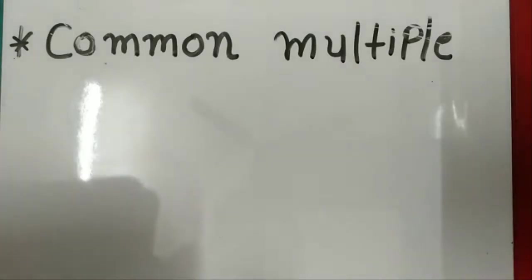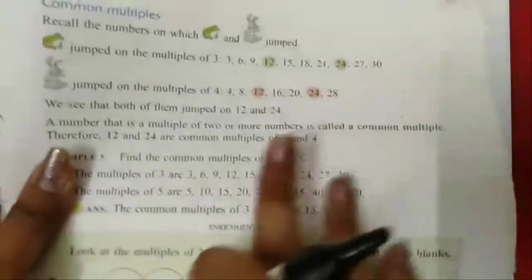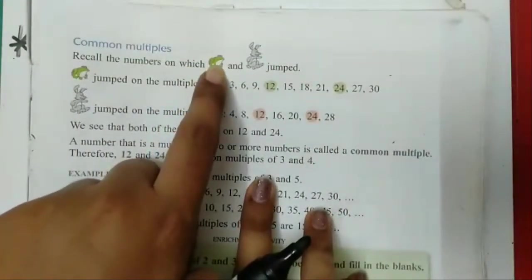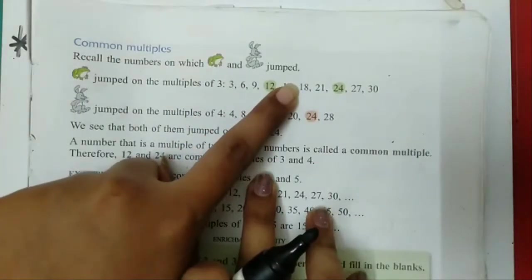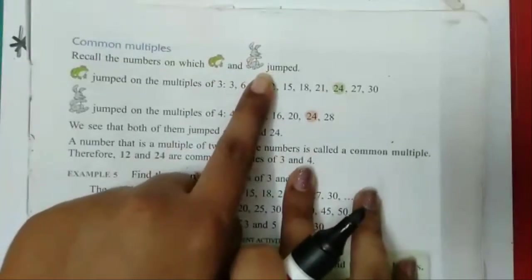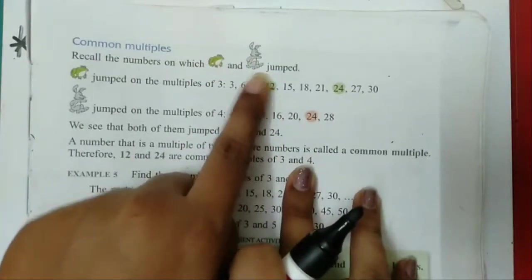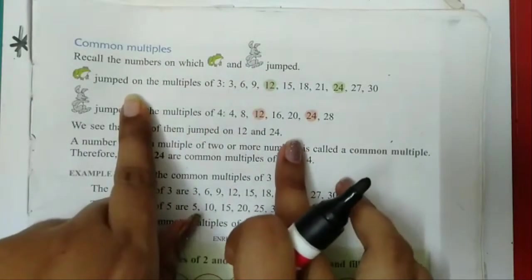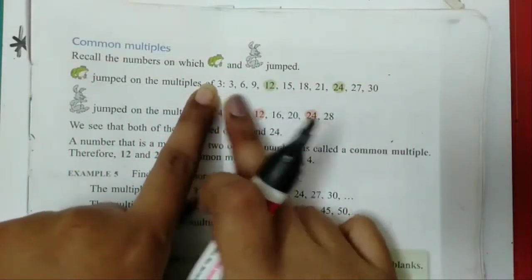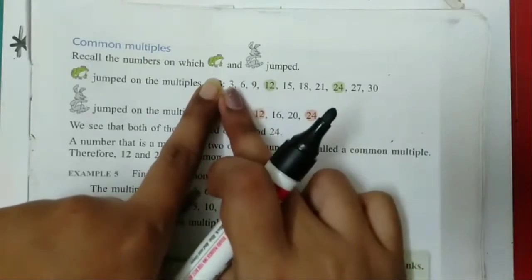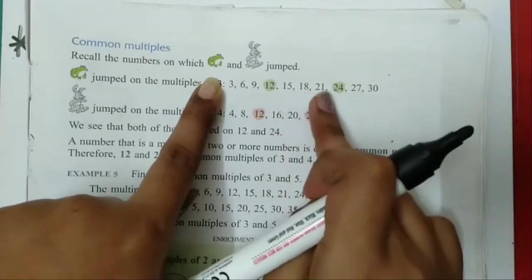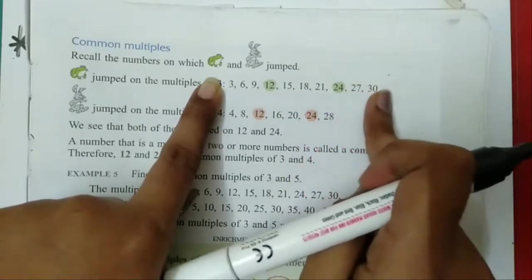How do we know? We saw a story — recall the number on which Mr. Froggy and Mr. Rabby jumped. Mr. Froggy jumped on which number? On 3. He jumped on: 3, 6, 9, 12, 15, 18, 21, 24, 27 and 30.